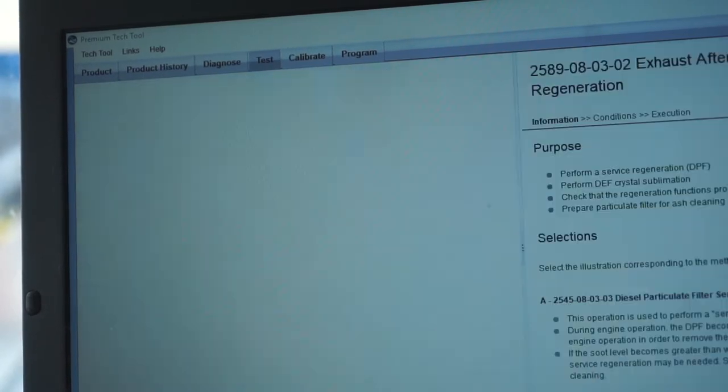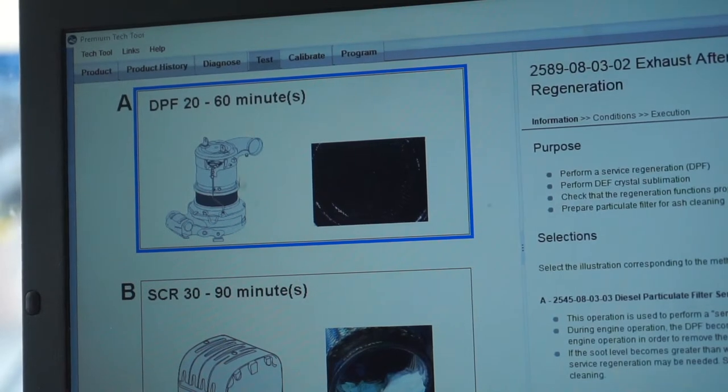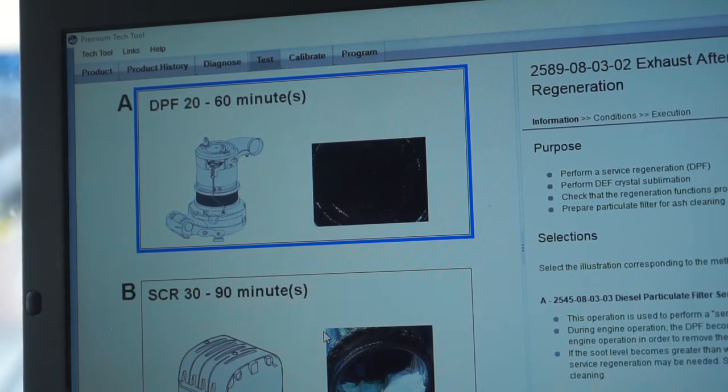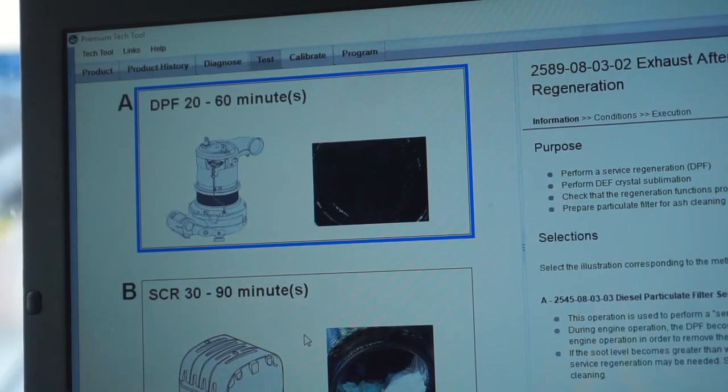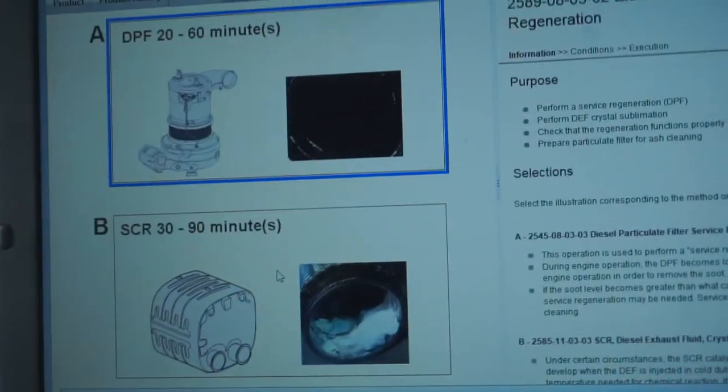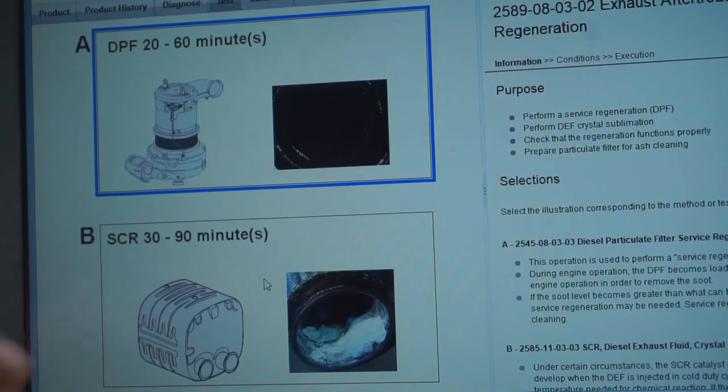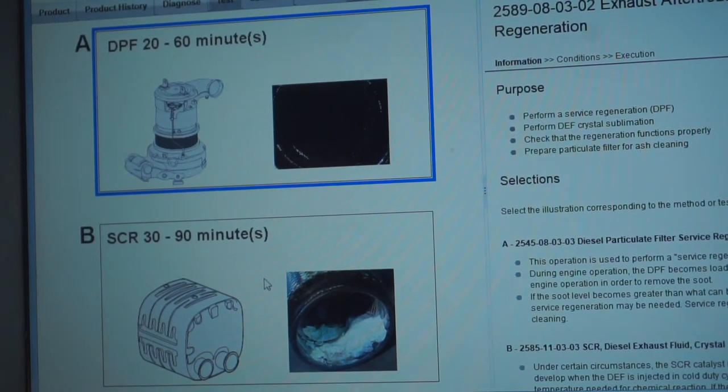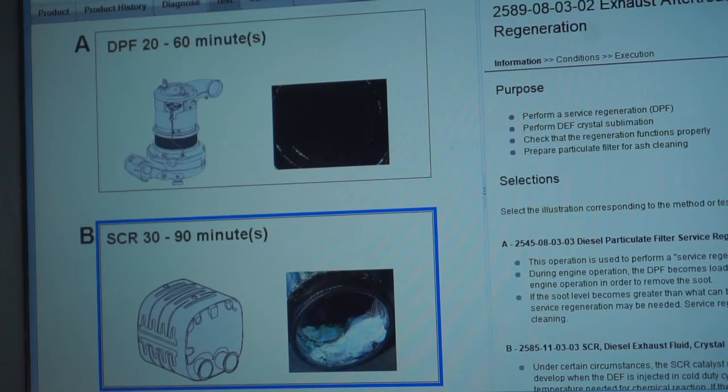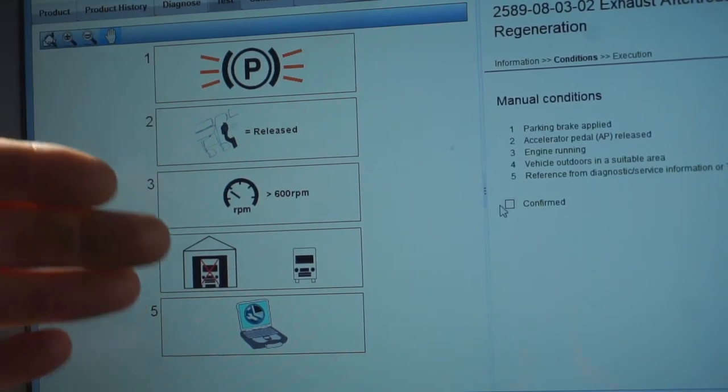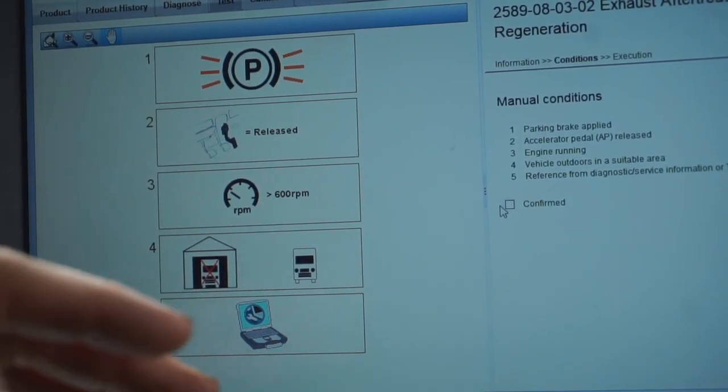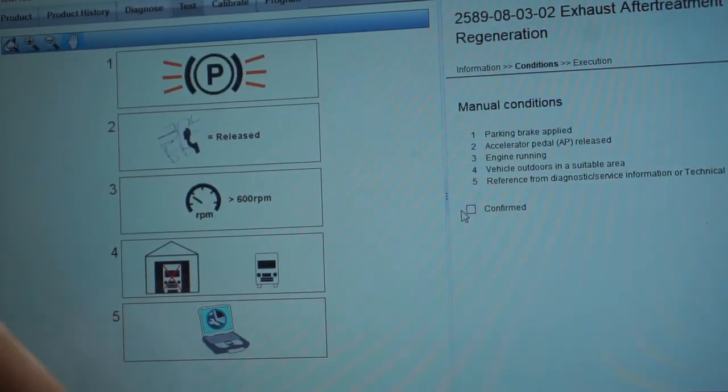You double click on it, come over here to start, read and understood. Here you've got two different kinds of regens that you can do. This one is just the DPF filter service regeneration, and this bottom one is the diesel exhaust fluid crystal sublimation. Once it gets really bad, you're going to have all those crystals as white chunks that are going to form down there. Start with that one first because it runs at a higher temperature burning all that stuff out.